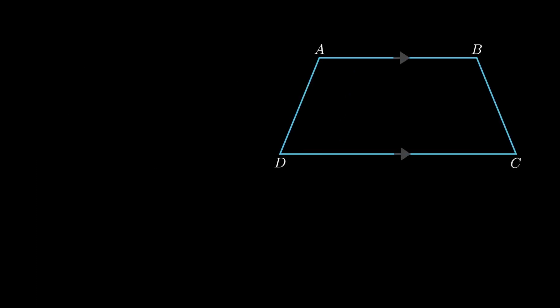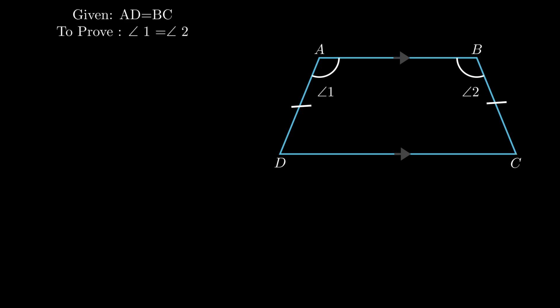The next problem states: ABCD is a trapezium such that AB is parallel to side CD and side AD = side BC. We need to show that angle A = angle B. From the figure, angle 1 is formed on transversal AD and angle 2 is formed on transversal BC, so there is no direct relationship between angle A and angle B. A construction is needed: draw a line CE parallel to side AD, and extend side AB until it meets point E.